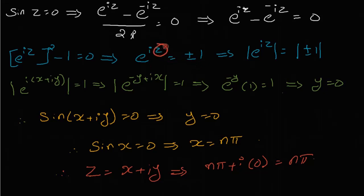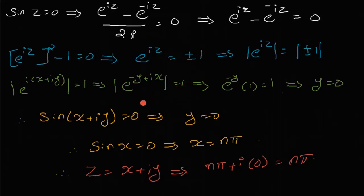So e^(iz) equals plus or minus 1. Now consider the modulus value. Writing e^(ix) as cos(x) + i·sin(x), the modulus is the square root of cos²(x) + sin²(x), which equals the square root of 1, that is 1 itself.